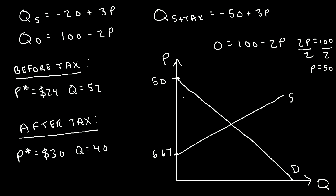The original market equilibrium quantity and price is the point where these demand and supply curves intersect. We found this was a quantity of 52 — so this is 52 on the x-axis — and the equilibrium price was 24, so we write 24 on the y-axis.